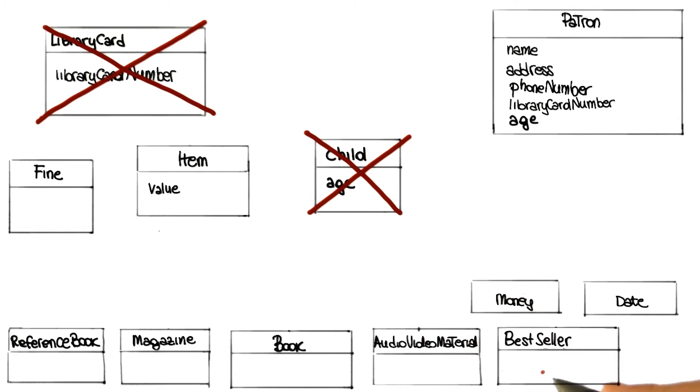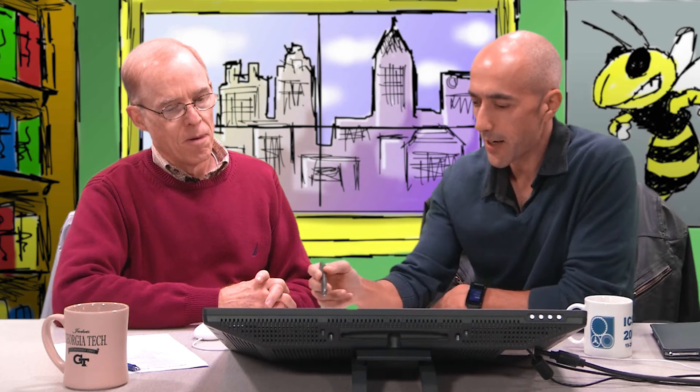So I'm going to eliminate the Child class and put the age in the patron. Now, in this spirit, something else that jumps at me is the idea of the Bestseller class — I feel like we might have the same problem. What is a bestseller? It's an item we want to restrict how long people can keep it, because there's such demand. So a book that is a bestseller — is it a bestseller forever? No, it's hot for a while and then it becomes just a regular item.